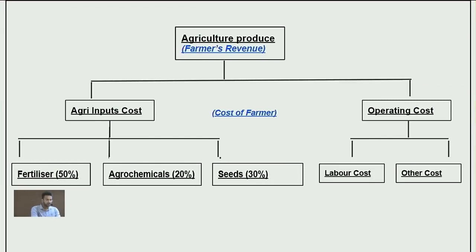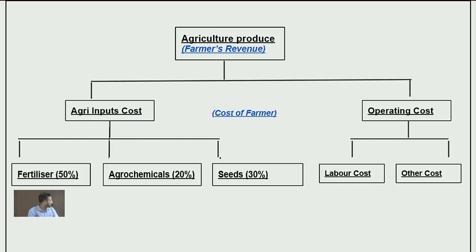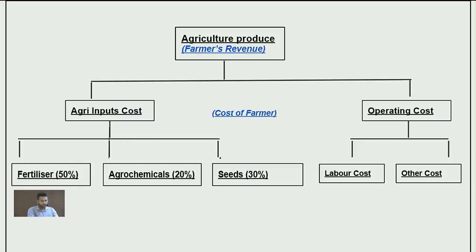Agricultural produce is the farmer's revenue, which is uncertain given erratic monsoon seasons. What is in the farmer's control is the overall cost of farming. Agricultural costs are divided into two parts: agri-input cost, which is the raw materials, and operating cost. Within agri-inputs, fertilizer forms the largest cost component at roughly 50%, agrochemicals at 20%, and seeds at close to 30%.